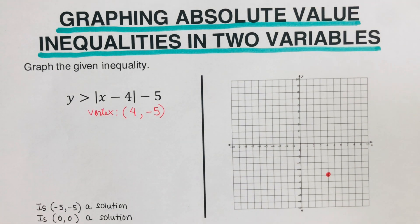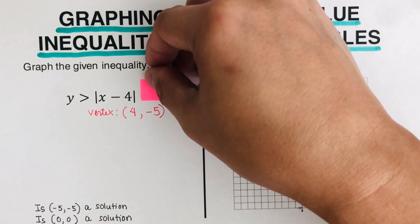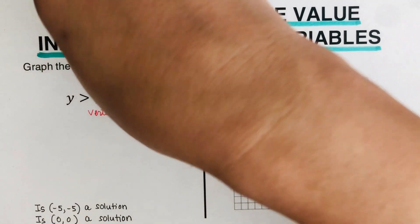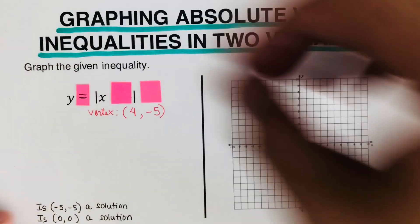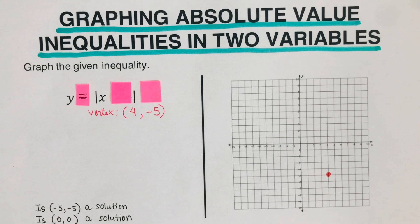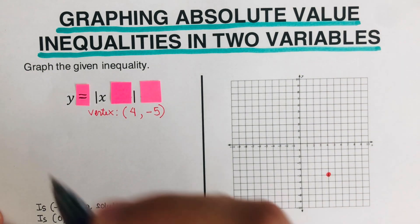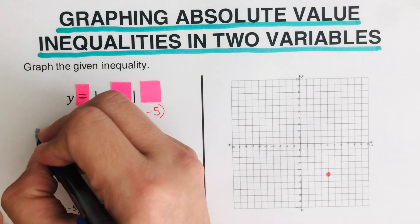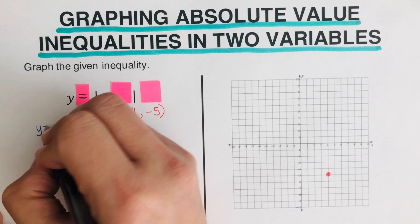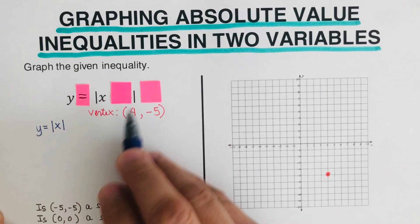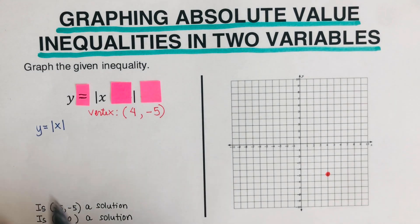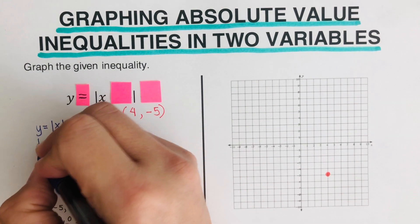Here's a trick on how to do that. The first thing we're going to do is cover both the h and k. Then change the inequality to an equal sign, and that would be the equation we use to determine the rest of the points. The equation would be y equals the absolute value of x. That's what's left over. Now we are going to create the table from the vertex.